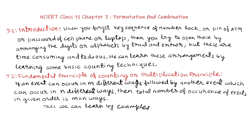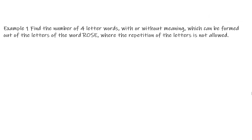Topic 7.2 Fundamental Principle of Counting, or Multiplication Principle. If an event can occur in m different ways, followed by another event which can occur in n different ways, then the total number of occurrences of events in the given order is m multiplied by n ways. We can learn this through examples. Example 1: Find the number of 4-letter words, with or without meaning,